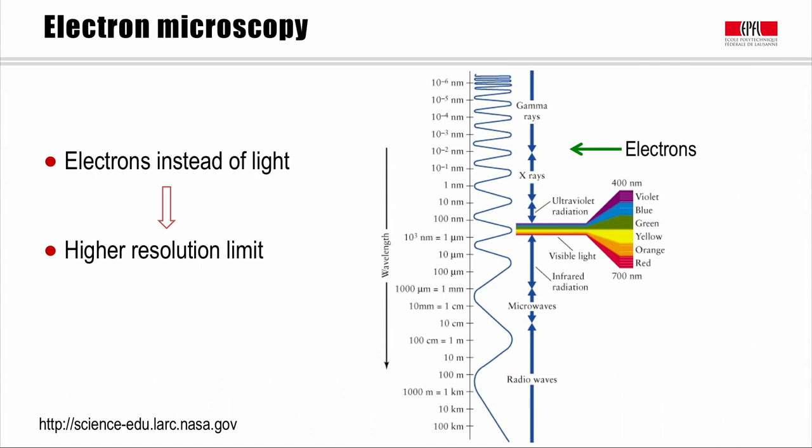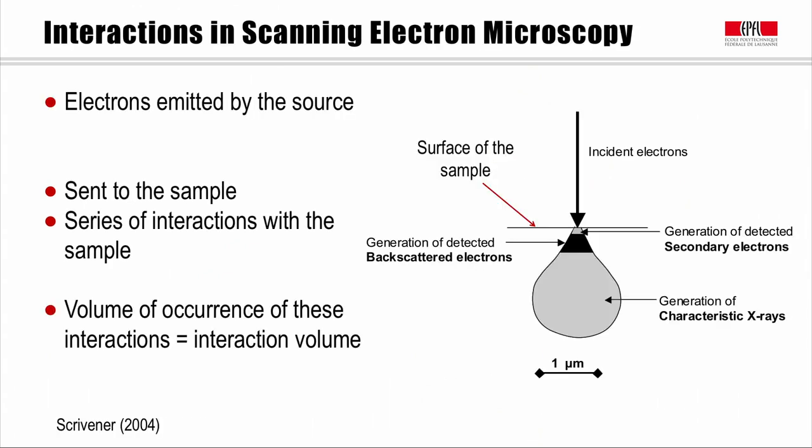In the case of electron microscopy, the resolution is actually not limited by the wavelength of electrons, but by the aberrations inside the microscope, which are kinds of physical deviations caused by the microscope lenses. The most common type of microscopy to observe the microstructure of cementitious materials is scanning electron microscopy, which is more accessible and easier to use than transmission electron microscopy.